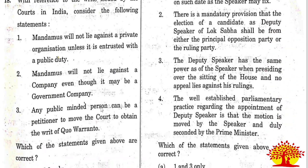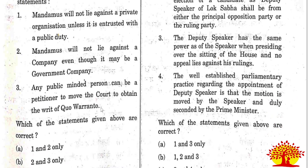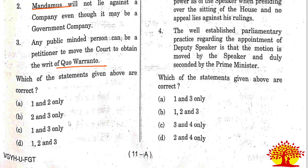Eighteenth question on writs issued by courts in India, related to mandamus and quo warranto: Statements 1 and 3 are correct. Option C is the right answer. Statement 2 is not correct because unlike the other four writs, quo warranto can be sought by anyone interested, not just the aggrieved party.